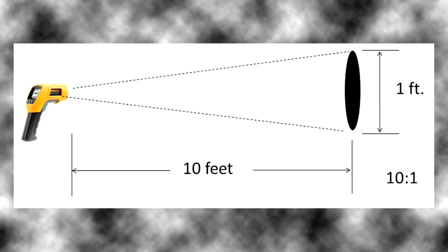For example if we had a device with a 10 to 1 distance to spot size ratio and we were 10 feet from the target we would take that 10 feet divided by the 10 to 1 ratio and that would give us a 1 foot diameter circle. So the laser would be pointed at the center of this one foot diameter circle and the IR thermometer would be measuring the average temperature of that one foot diameter circle.